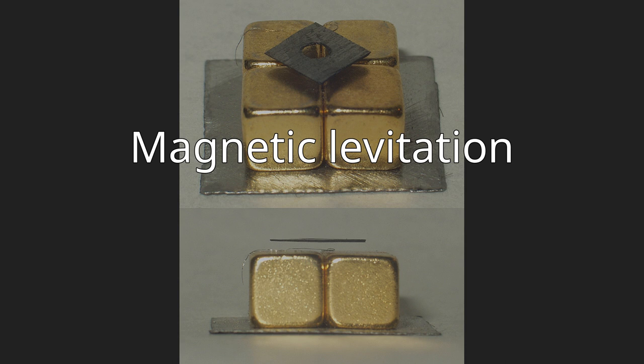Magnetic levitation, also called maglev or magnetic suspension, is a method by which an object is suspended with no support other than magnetic fields. Magnetic force is used to counteract the effects of the gravitational force and any other forces.